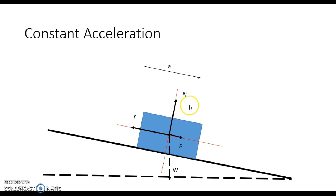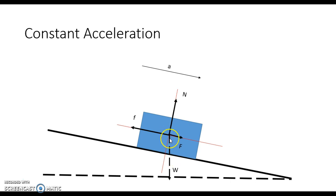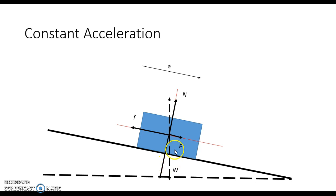The forces acting on this box include a force pushing the box down along the incline, weight pulling the box straight down, and frictional force working against the downward motion. We also have our normal force. It's important to mention that the normal force is always perpendicular to the surface — we cannot draw it straight up as in the previous example. Weight, no matter the surface, always points straight downward toward the earth. These forces include components of the weight vector.